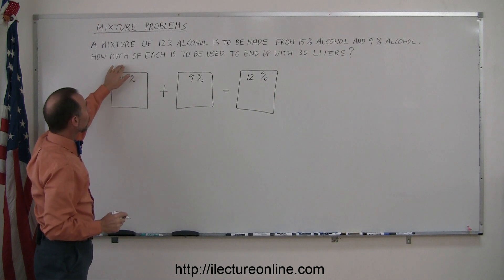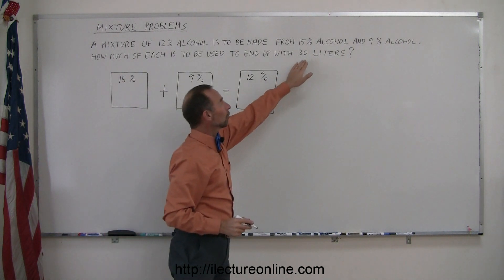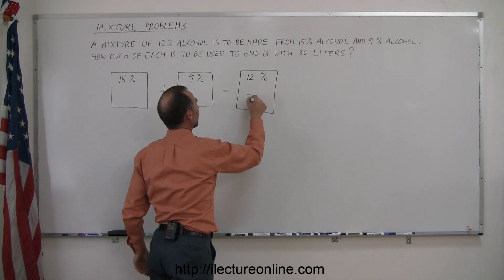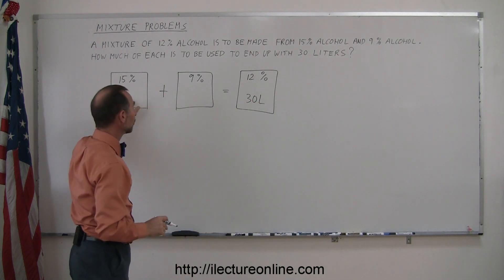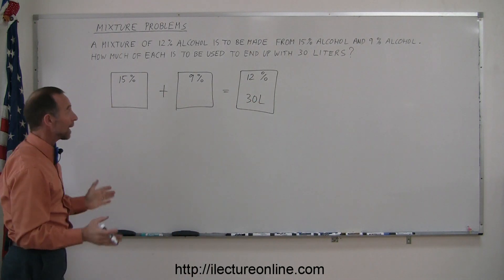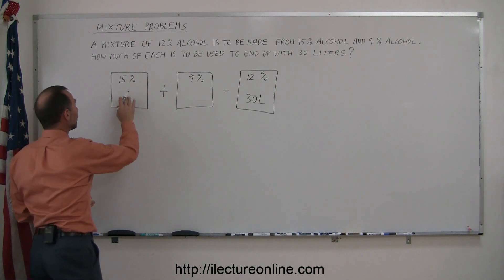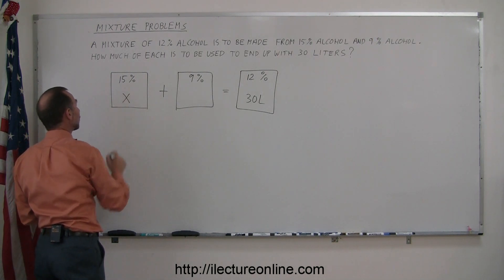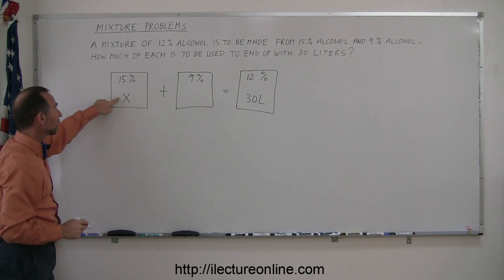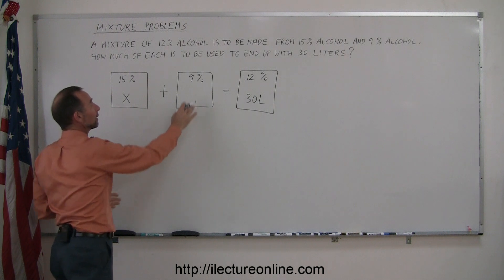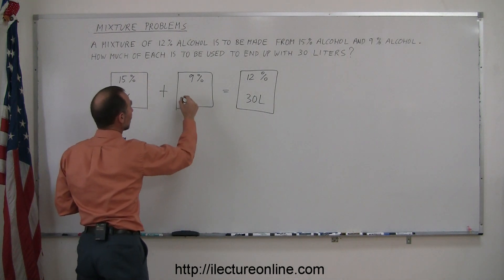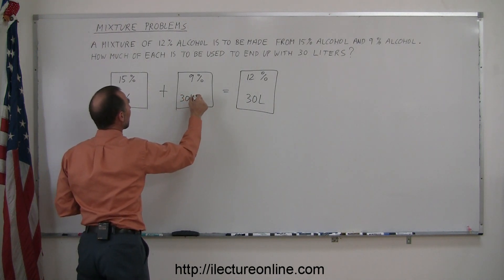We already know that you're going to end up with 30 liters of 12% alcohol, but you don't know how much you need for each of these. But you do know that they both add up to 30 liters. So if this can be represented by X, meaning you'll use X liters of 15% solution, then the remainder must be made up by the 9% solution. The remainder can be written as 30 liters minus X.